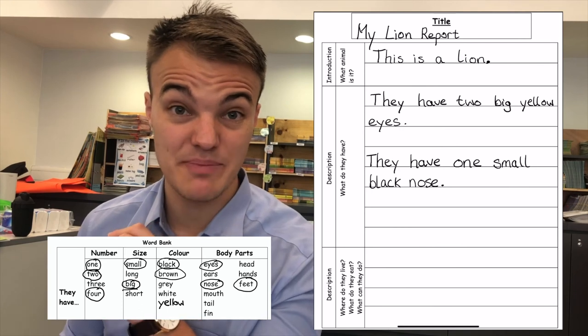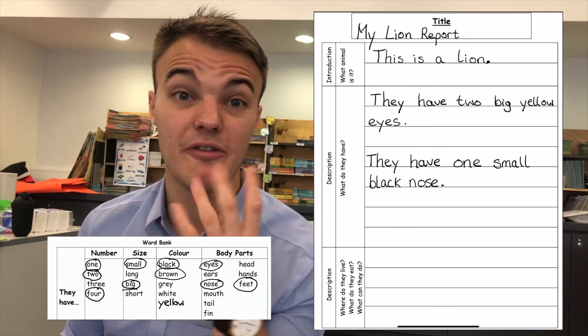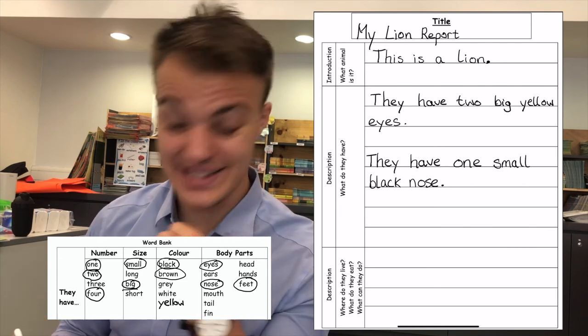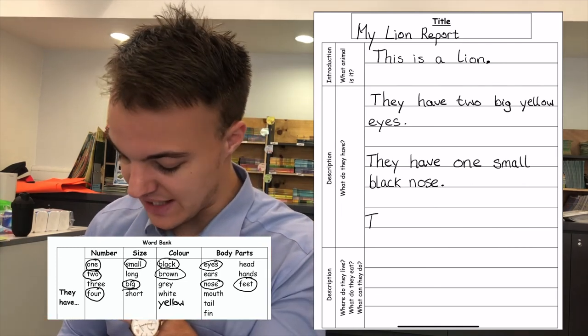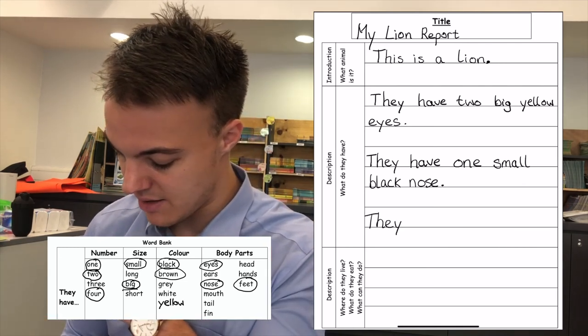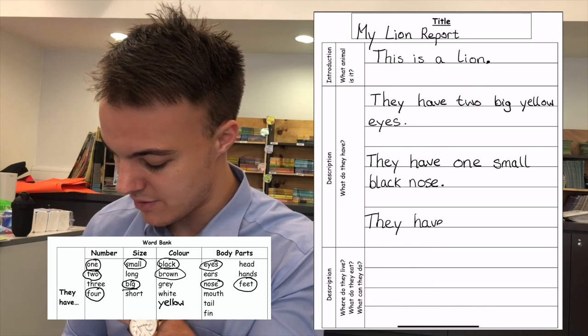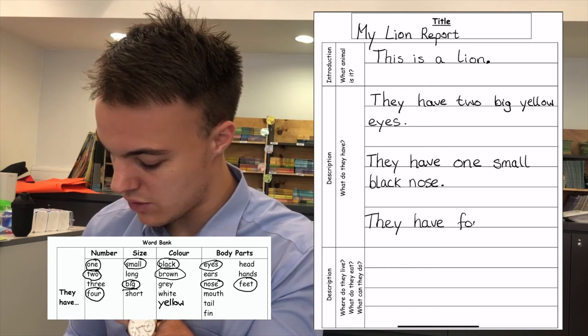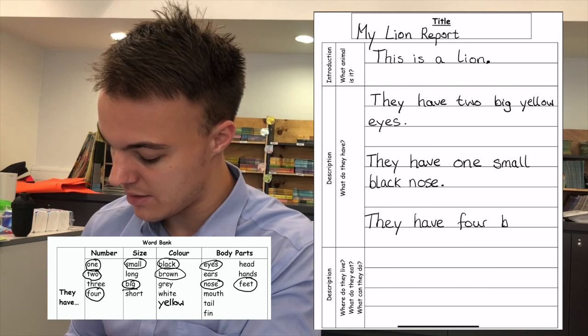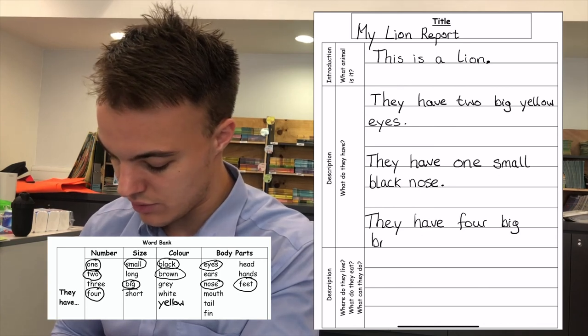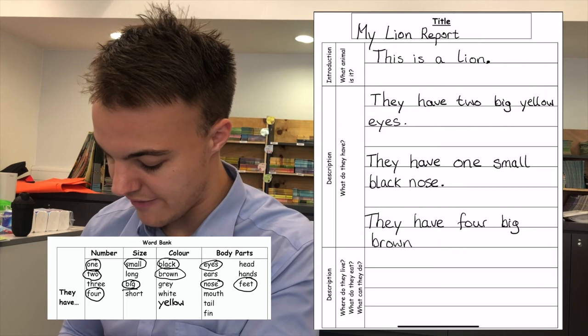And one more sentence in this box. They have four big brown feet. Big letter T. They have four big brown feet.